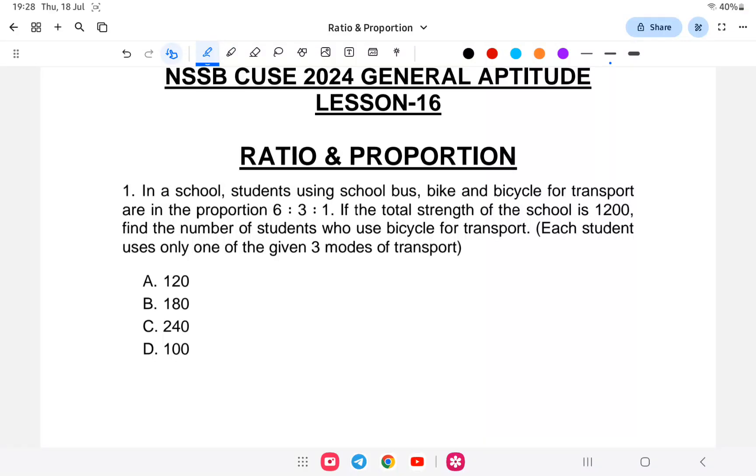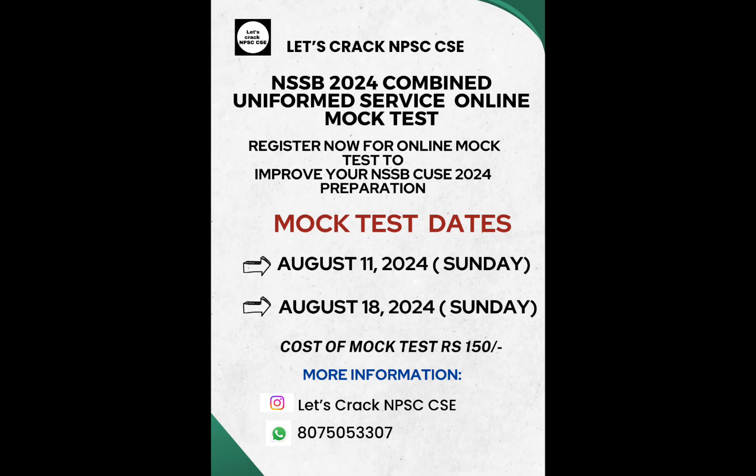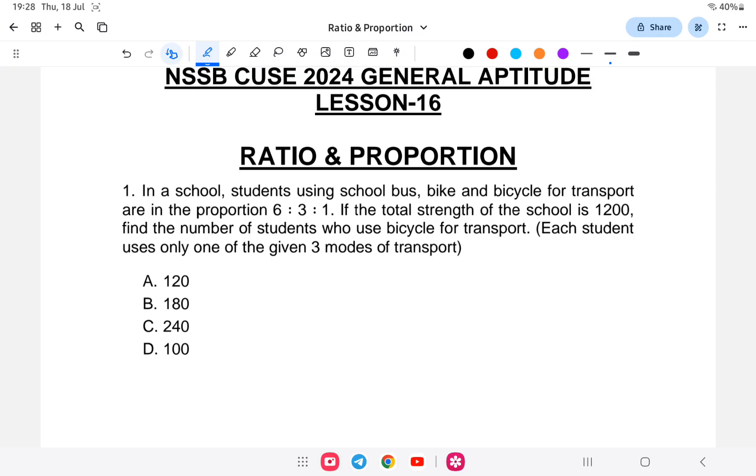Hello everyone, welcome back to another class of NSSB CSE Combined Uniform Service. This is lesson number 16 of Ratio and Proportion. Before I start my class, if you want to join the online mock test, the link is provided in the description. You can check it out, which will be very helpful for your NSSB preparation. If you don't give mock tests, then you will not know what your preparation level is, so if you're interested you can register.